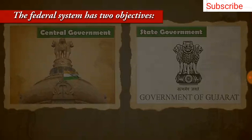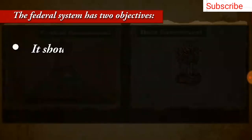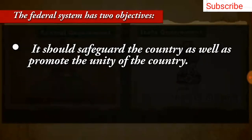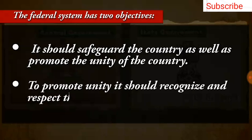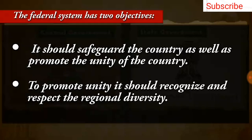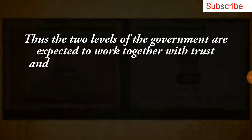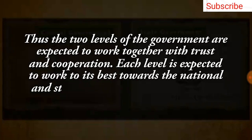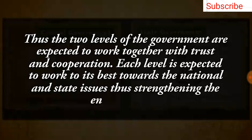The federal system has two objectives. It should safeguard the country as well as promote the unity of the country. To promote unity, it should recognize and respect the regional diversity. Thus, the two levels of government are expected to work together with trust and cooperation. Each level is expected to work to its best towards the national and state issues, thus strengthening the entire country.